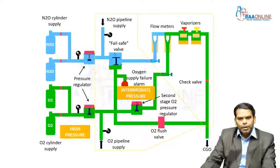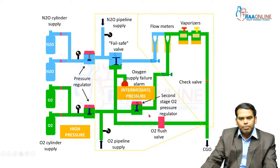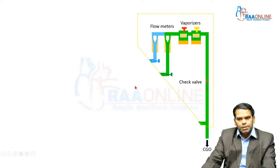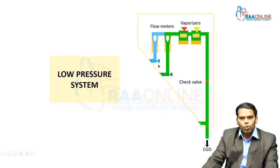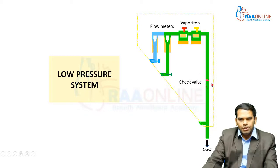Welcome to RAW Online. The components of the anesthesia workstation are divided into three components: high pressure, intermediate, and the low pressure system, based on the pressure received by each. The low pressure system includes components mainly downstream to the flow control valves, and the pressure in this section will be between 14 to 26 psig, based on the flow from the flow control valves and the presence of back pressure devices like check valves.